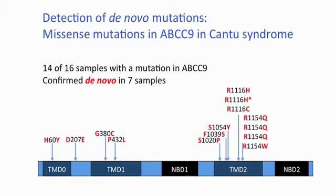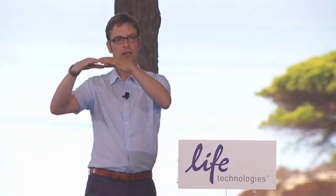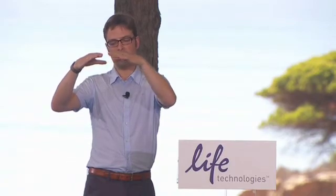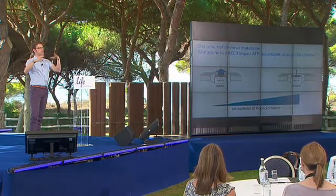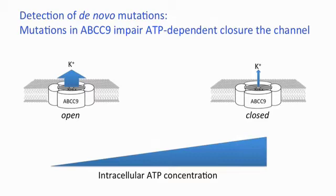We then went into the biology of the ABCC9 gene. ABCC9 is part of a potassium channel located in the outer cell membrane. The ABCC9 subunits detect the ATP levels inside the cell, and depending on those ATP levels the channel is open or closed. At low ATP concentration the channel is open; at high ATP concentration the channel is closed.